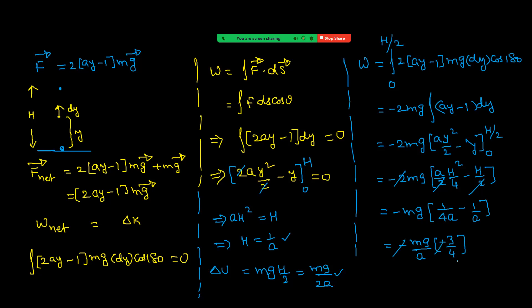The result simplifies to -mg/(4a) times (-3), giving the final answer. The main things to focus on: first, calculation of maximum height using the fact that initial and final velocities are zero, so net work equals delta K from work-energy theorem. Once we get maximum height, the increment in potential energy is straightforward, and then work done uses the definition of work. Let us see the next problem.